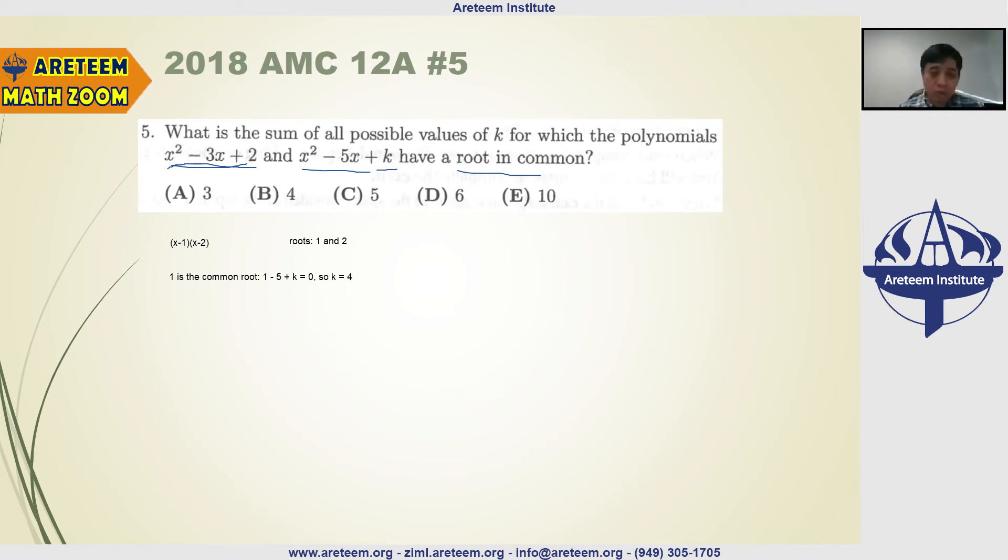So what if 2 is a common root? 4 minus 10 plus k is equal to 0. So in this case, 4 minus 10, in this case, k has to be 6.